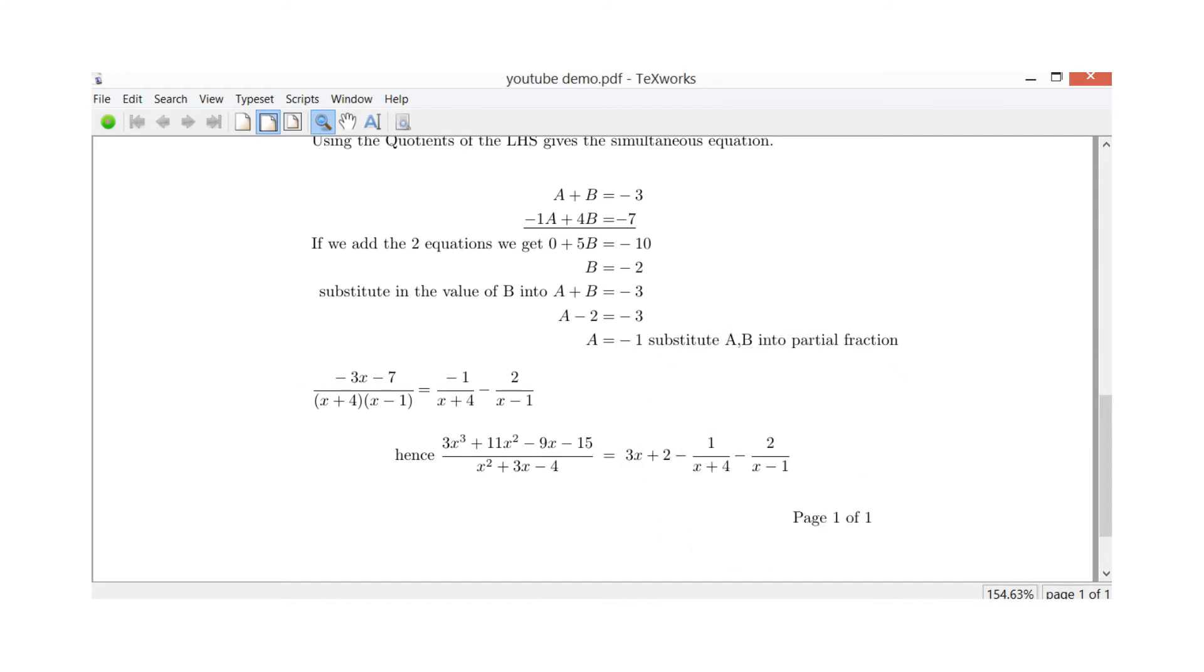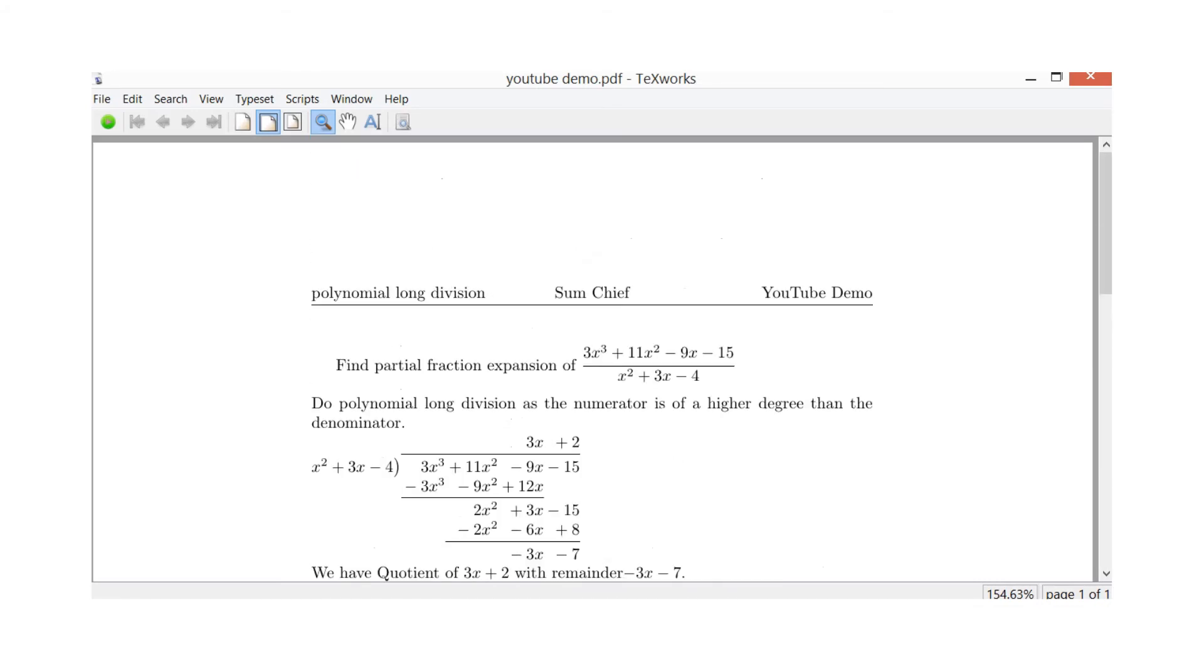So now the best use for partial fraction expansion is when you do an integration. So to integrate this thing here, this equation here, that would be really difficult. Whereas if you want to integrate this bit and they're both of the same value, this would be pretty straightforward. 3x integrate that, integrate the 2, integrate minus 1 over x plus 4, some sort of logarithm. And same here, minus 2, x minus 1, some sort of logarithm. So now I'm going to show you how that's programmed into LaTeX.